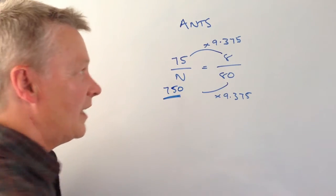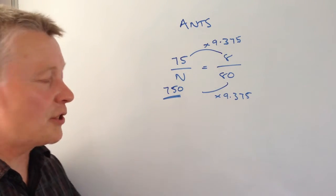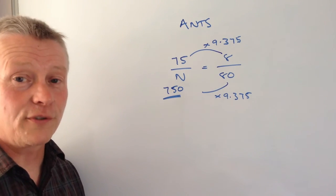So what we're saying is in answer to this question, the original population of ants would have been 750.